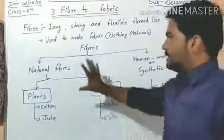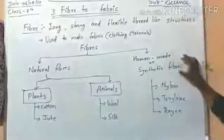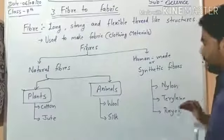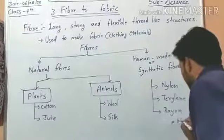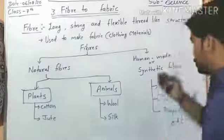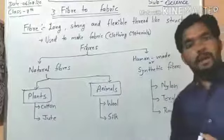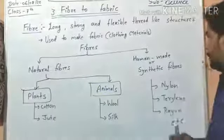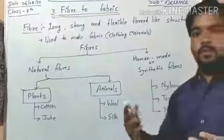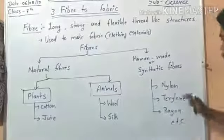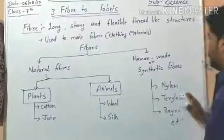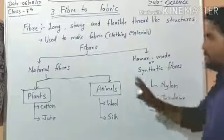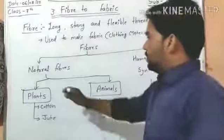If we talk about human-made or synthetic fibers — those made by humans, called synthetic or artificial fibers — examples are nylon, terrylene, rayon, etc. Nowadays there are so many types of synthetic fiber available, by which we can make many things like parachute strings. These fibers are made up of certain types of chemicals and polymers.